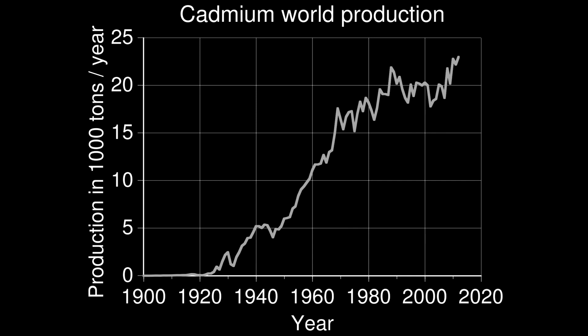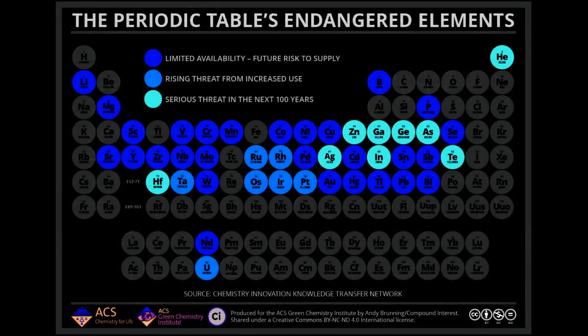Some zinc ores contain up to 1.4% cadmium. In the 1970s, the output was six and a half pounds of cadmium per ton of zinc. The American Chemical Society's Endangered Element list places cadmium as "limited availability, future risk to supply." So we need to keep our eye on this and be sure to recycle our cadmium carefully — not only because it's relatively rare, but also because it's highly toxic.